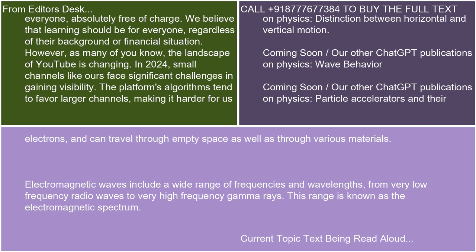Electromagnetic waves include a wide range of frequencies and wavelengths, from very low-frequency radio waves to very high-frequency gamma rays. This range is known as the electromagnetic spectrum.